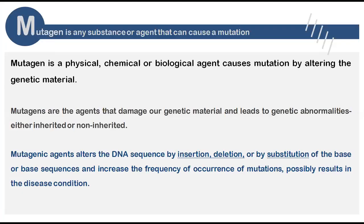A mutagen is any substance or agent that can cause a mutation. It may be a physical, chemical, or biological agent which alters the genetic material through mutation. These mutagenic agents damage our genetic material and lead to abnormalities, which may come through an inherited or non-inherited process. They increase the frequency of occurrence of mutations — for example, from one in a thousand to ten in a thousand molecules — leading to disease conditions in any organism.